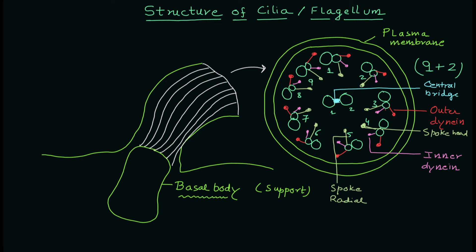These are some of the important parts of the cilia and flagellum structure. Next, you have another protein — I'm connecting all these sub-fibers using a red line — and this is the nexin protein. These are some of the important points in the structure of the cilium and flagella: dynein proteins and their roles, the role of nexin protein. Let me also label these round structures as sub-fiber A and sub-fiber B. So this completes the nine plus two arrangement.